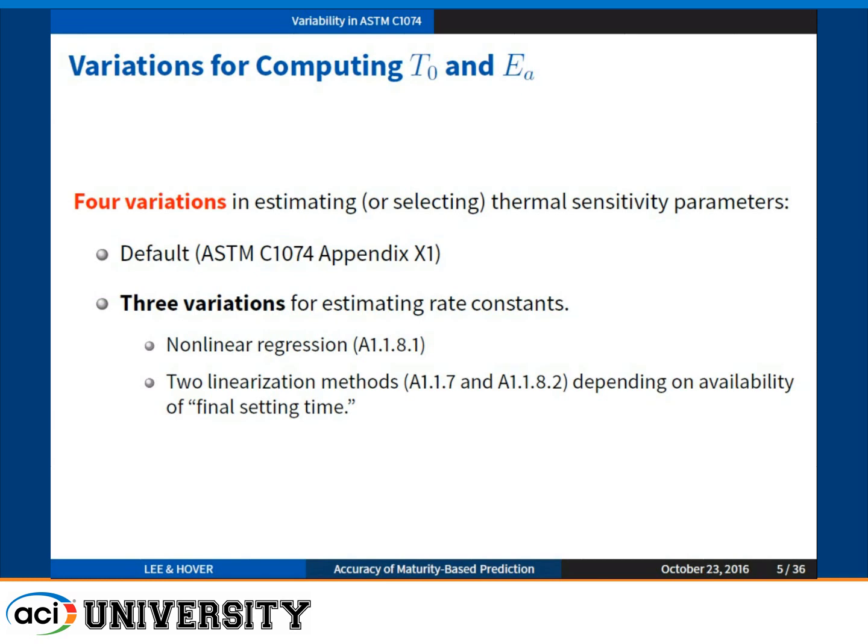There are also two linearization method variations, depending on the availability of the final setting time. You would expect that applying those three variations of the numerical method to one single data set would give exactly the same value — because it is just a minor numerical variation, nothing to do with physical variation. However, what I'm going to show today is that applying those three methods to get the rate constant and calculate datum temperature or activation energy reveals whether the results are really the same or different.